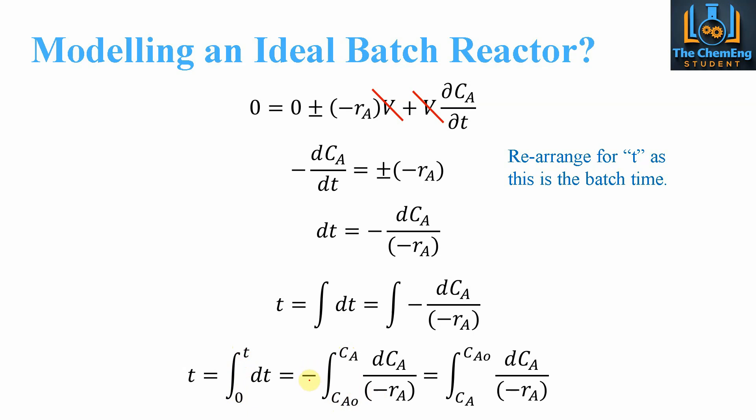To cancel out this negative, we invert the limits. By inverting the limits, we get rid of the negative, so the final integral is from Ca0 to Ca of dCa over -rA. That is the equation for the batch time.